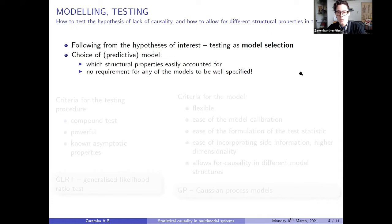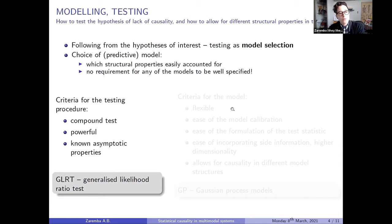And what is also important is that this concept is basically a comparison of two models. When we look at testing, this is going to be seen as a model selection. And for that, we have to choose the statistical test and also what is the predictive model, what is the model that we want to use here. So, the criteria for testing procedure that were the main criteria for me when I was looking, when I was developing the framework was, of course, was that I want to be able to have a compound test. I want to have a powerful test and I want to know asymptotic properties.